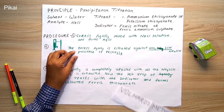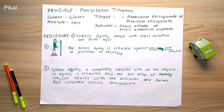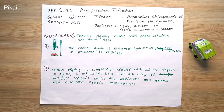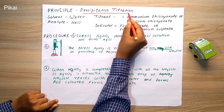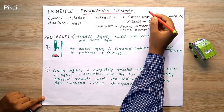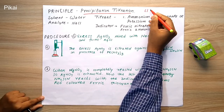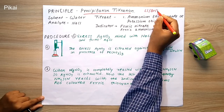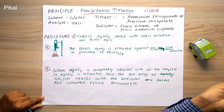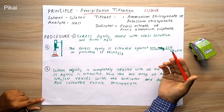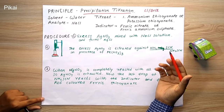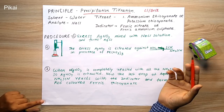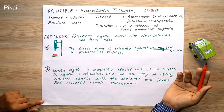Today we are going to discuss Volhard's method, which comes under precipitation titration. We employ this method to determine the constituent of an unknown analyte in a given sample solution. The main principle is the formation of a precipitate, and we use this method to determine chlorine, bromine, and iodine. Our main objective is to discuss the principle, the procedure, and the materials needed in this experiment.